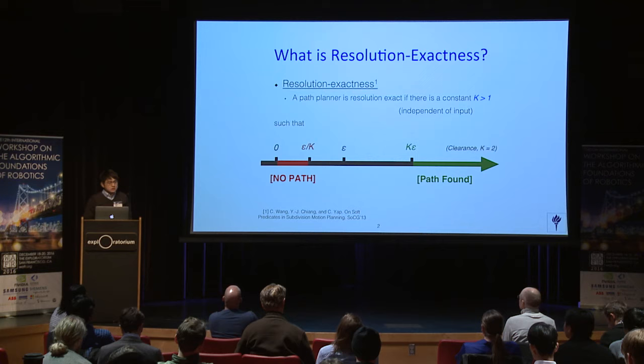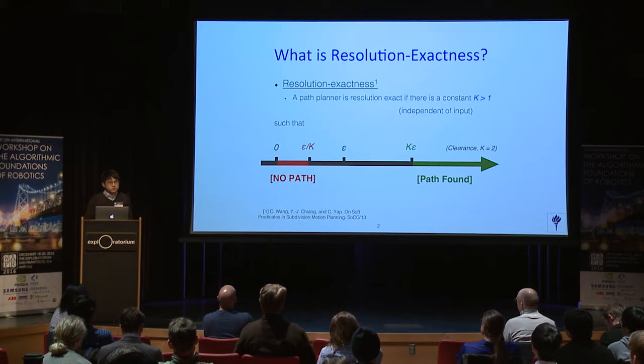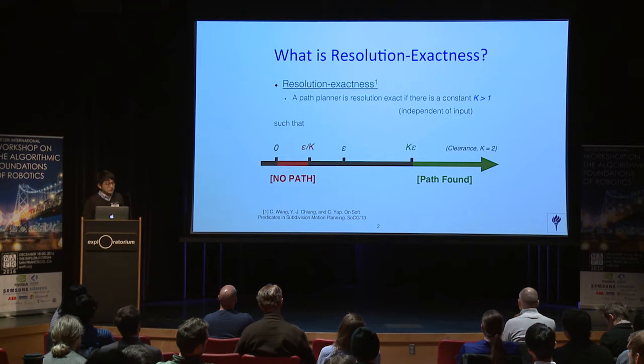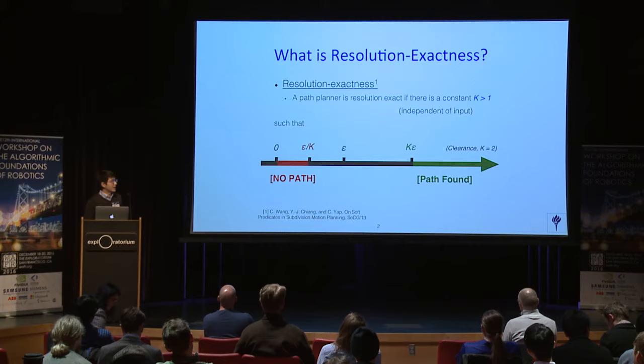First, what is resolution exactness? The resolution exact algorithm has a constant k, which is greater than one and independent of the input. There are two conditions: pass or no pass. For a given epsilon, if the clearance is between epsilon over k and k times epsilon, the program may output either pass or no pass.